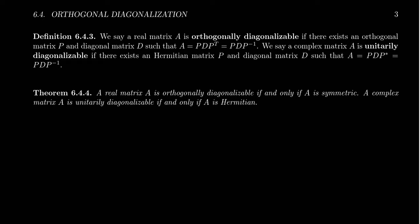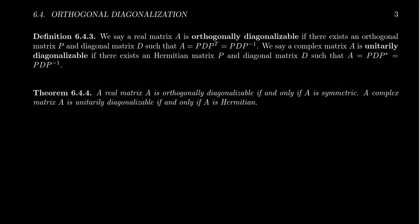Welcome back everyone. In the previous example, we looked at a symmetric matrix. We double-checked that the eigenvectors of that symmetric matrix are in fact orthogonal to each other. And then we actually proceeded to compute a diagonalization of the matrix. We chose to form the diagonalization where the non-singular matrix P in that diagonalization is itself an orthogonal matrix.